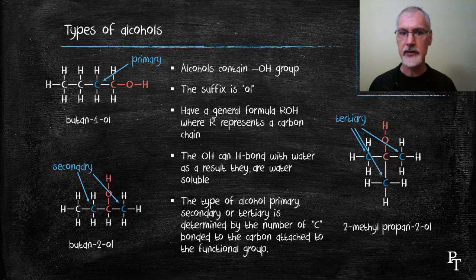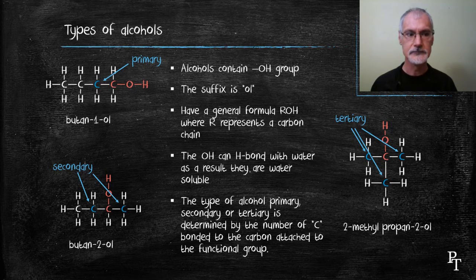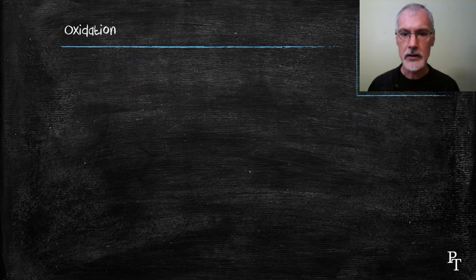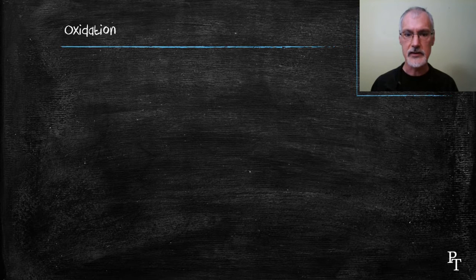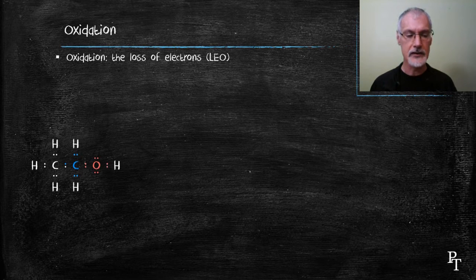The reason I'm going to show this is because the fate of these alcohols and how they react depends very much on what type that they are. Alcohols tend to undergo a process called oxidation, and we've seen that before from our previous unit referring to the loss of electrons.